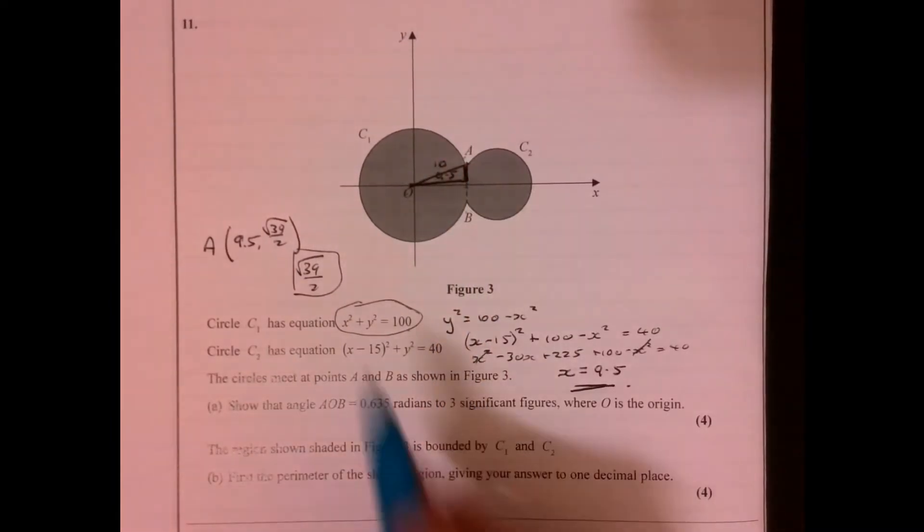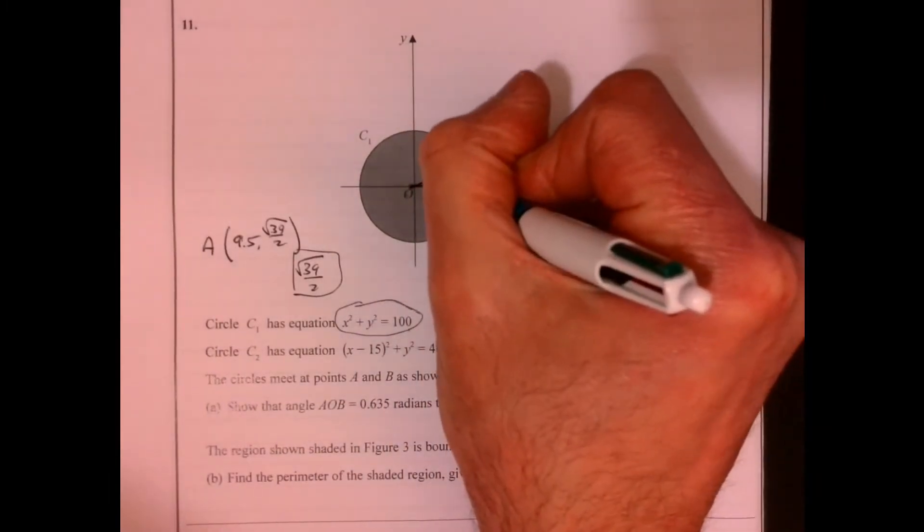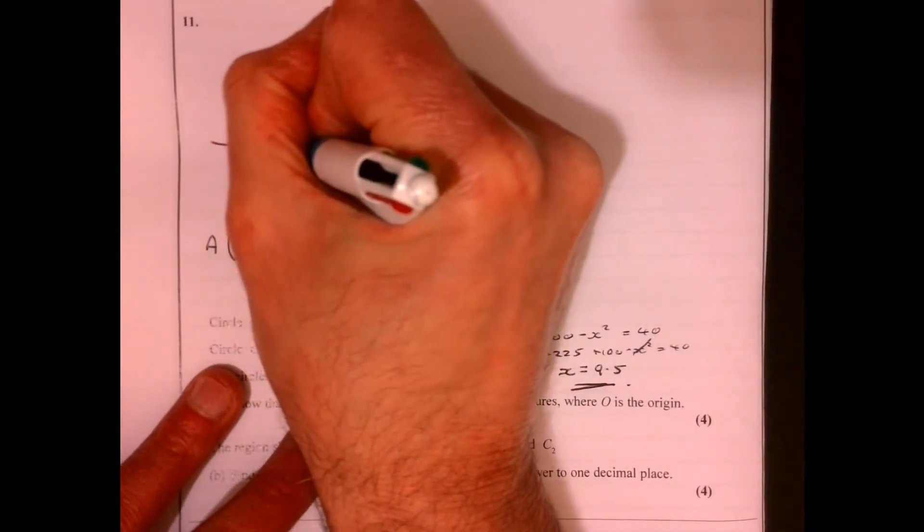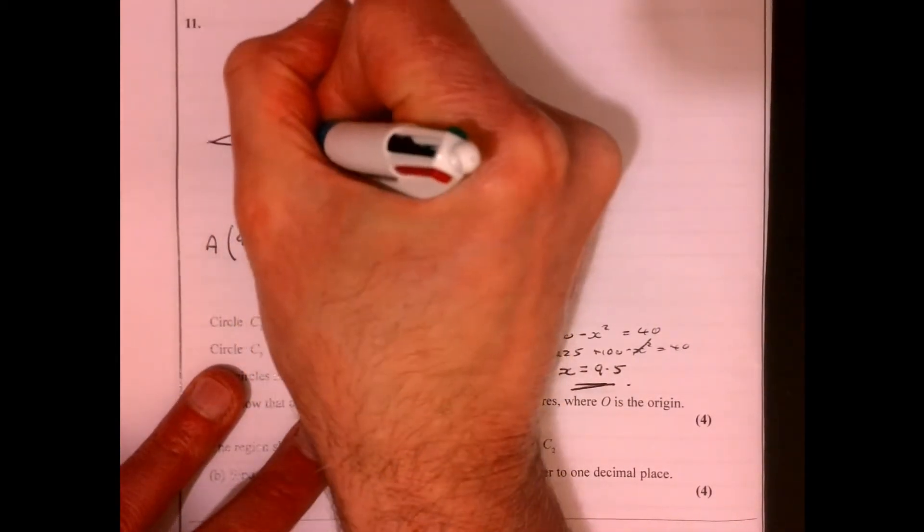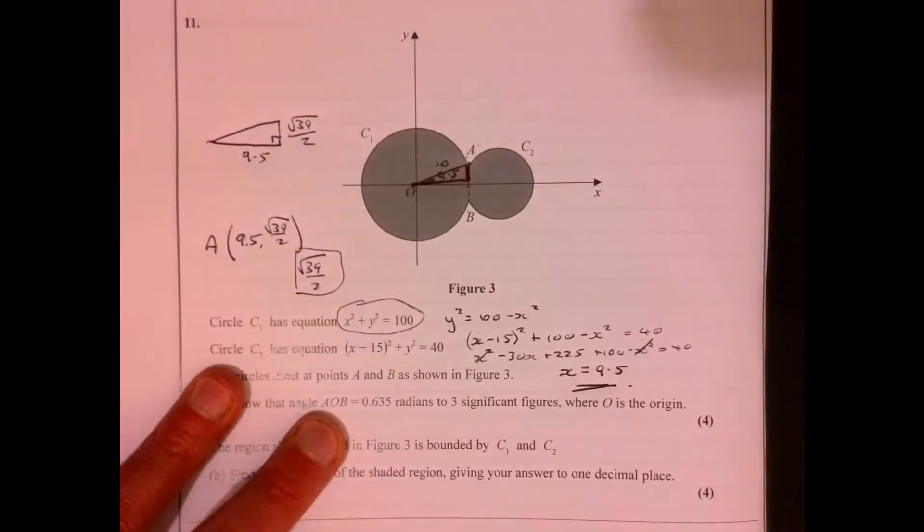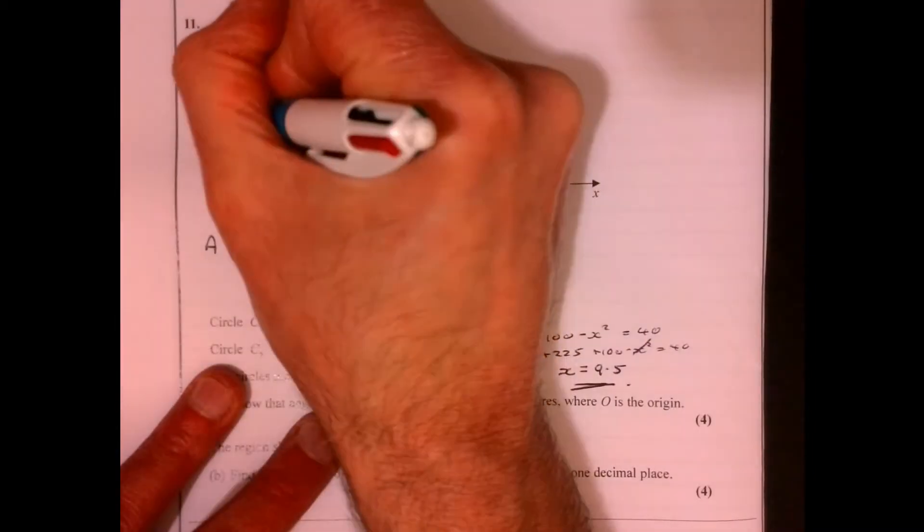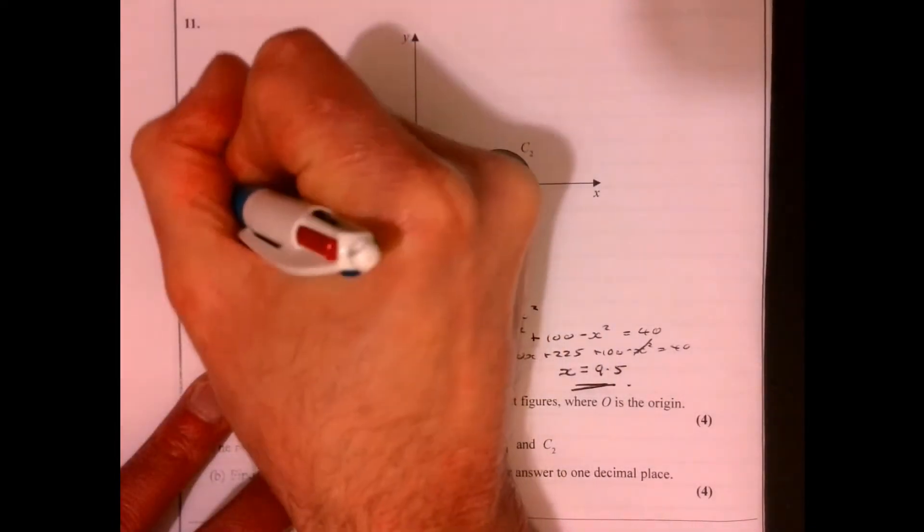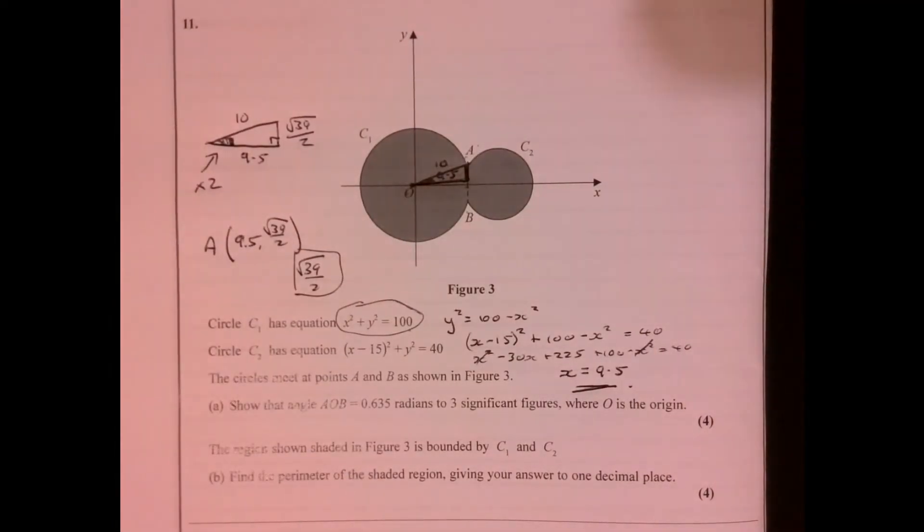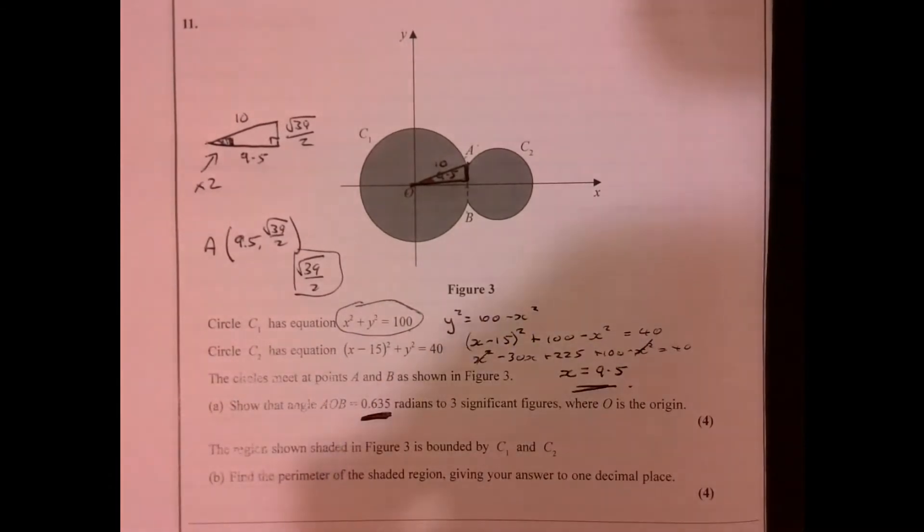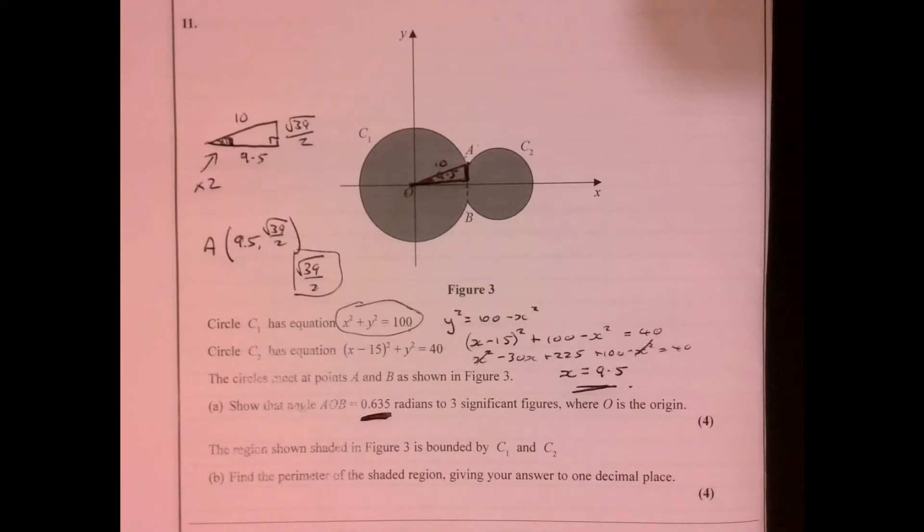So we can easily work out what this angle is in here. All right, so if I just draw out to the side here, got a right angle triangle. Now that bit there's 9.5, we know this bit is also root 39 over 2, and we know that that bit there is 10. Now we can work that bit and then multiply it by 2, and you will get our angle just down here of 0.635 radians.